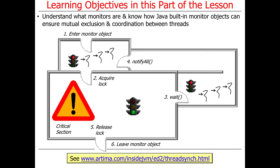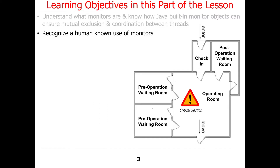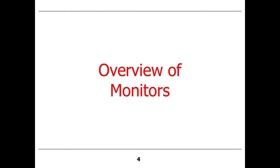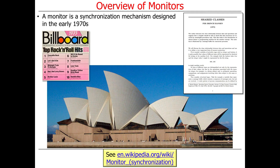So we'll talk about these things called monitor objects. I'll explain what they are, and I'll show you how they're used to ensure mutual exclusion and coordination between multiple Java threads. I'll give you a simple human-known use of monitors. A monitor is actually a concept that's been around for a long time.